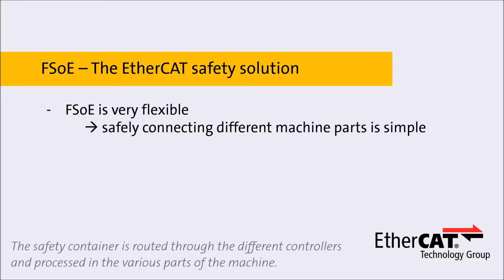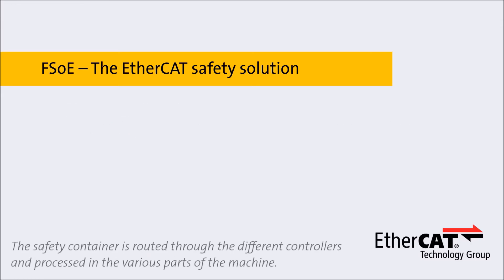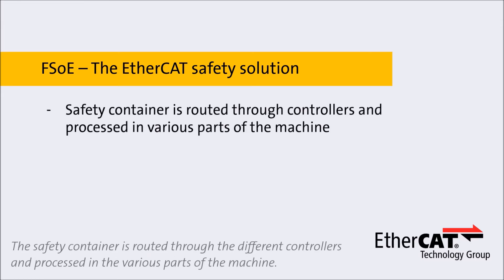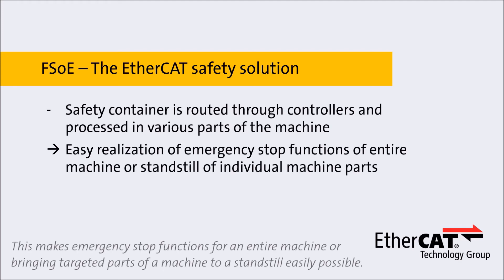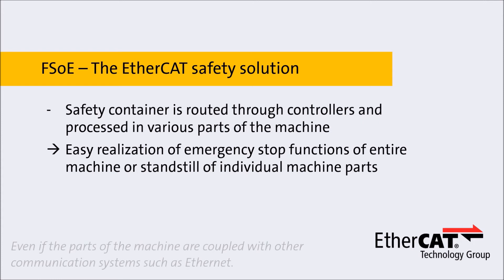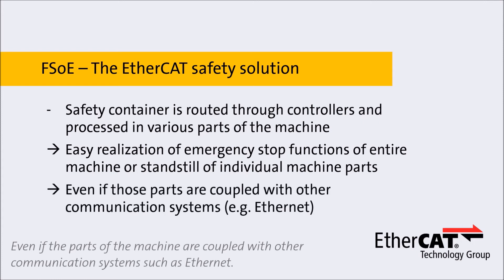The safety container is routed through the different controllers and processed in the various parts of the machine. This makes emergency stop functions for an inter-machine or bringing targeted parts of the machine to a standstill easily possible, even if the parts of the machine are coupled with other communication systems such as Ethernet.